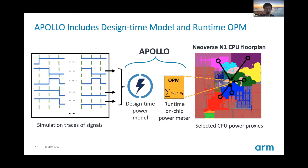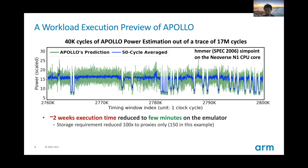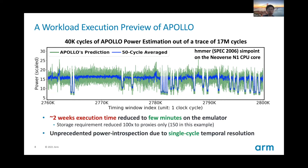Apollo works by constructing a linear power model on selected power proxies — power-correlated RTL signals in the design. The model can be implemented as an on-chip power meter, the OPM. This is the workload execution preview with Apollo: the trace is the Hammer scene point from SPEC, running on the Neoverse N1 CPU core. The entire scene point is 17 million cycles; here we show part of the trace with 40,000 cycles. Running it on the emulator takes about two weeks overall, whereas Apollo can achieve 90–95% accuracy within a few minutes. The per-cycle temporal resolution enables tracing of workload-driven variations in current demand.